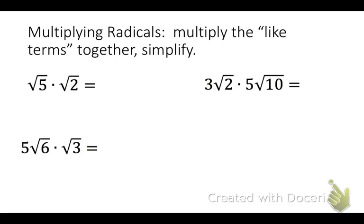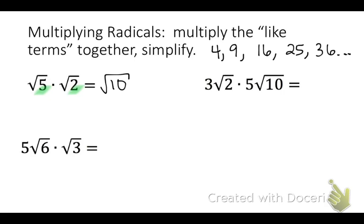Now we're going to multiply. Whenever we multiply radicals, we multiply the like terms together. For square root 5 times square root 2, the 5 and 2 are in the same position so we just multiply them: 5 times 2 is 10. Then we check if square root 10 can be simplified. Looking at our list of perfect squares, neither 9 nor 4 divides 10, so none of our perfect squares divide 10 — we're done. The answer is square root 10.